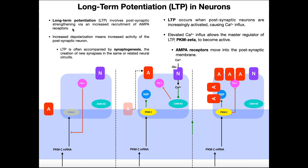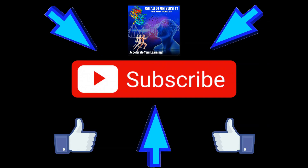There is a presynaptic neuron, but all the events here are taking place at the postsynaptic membrane. Hopefully this video gave you a good understanding of long-term potentiation. In the next video, we'll be discussing the mechanism of long-term depression, and you'll find it's very similar — it's pretty much just the reverse process. Please make sure to like this video and subscribe to my channel for future videos and notifications. Thank you very much.